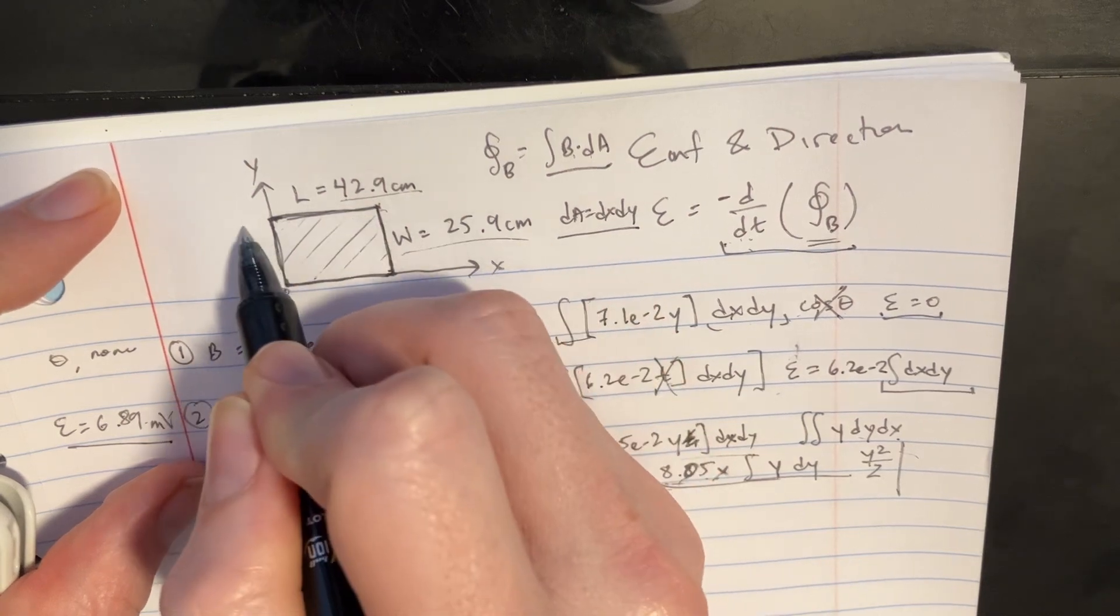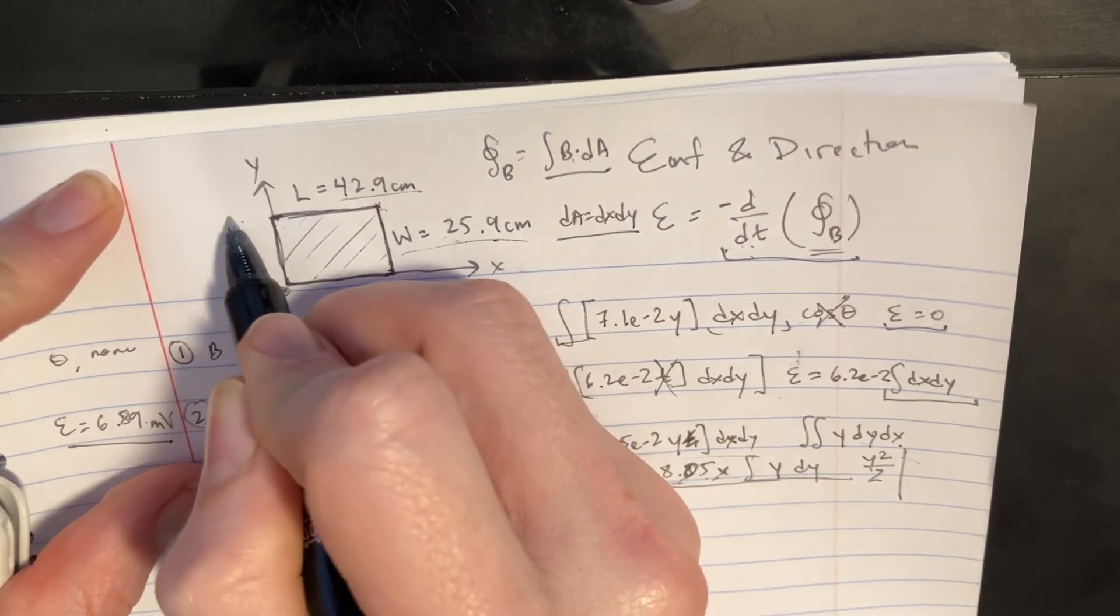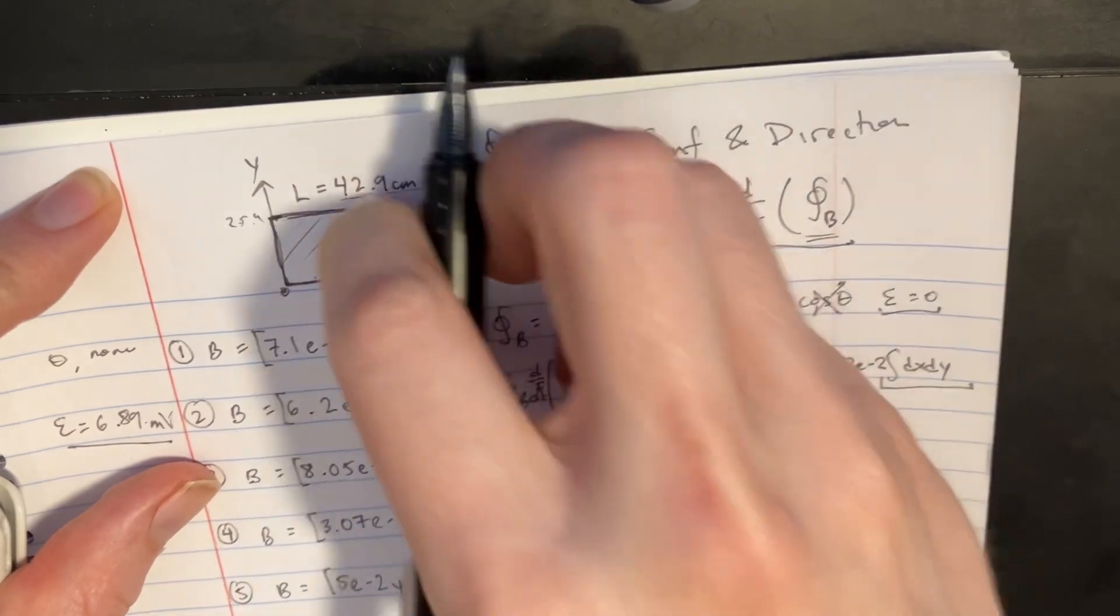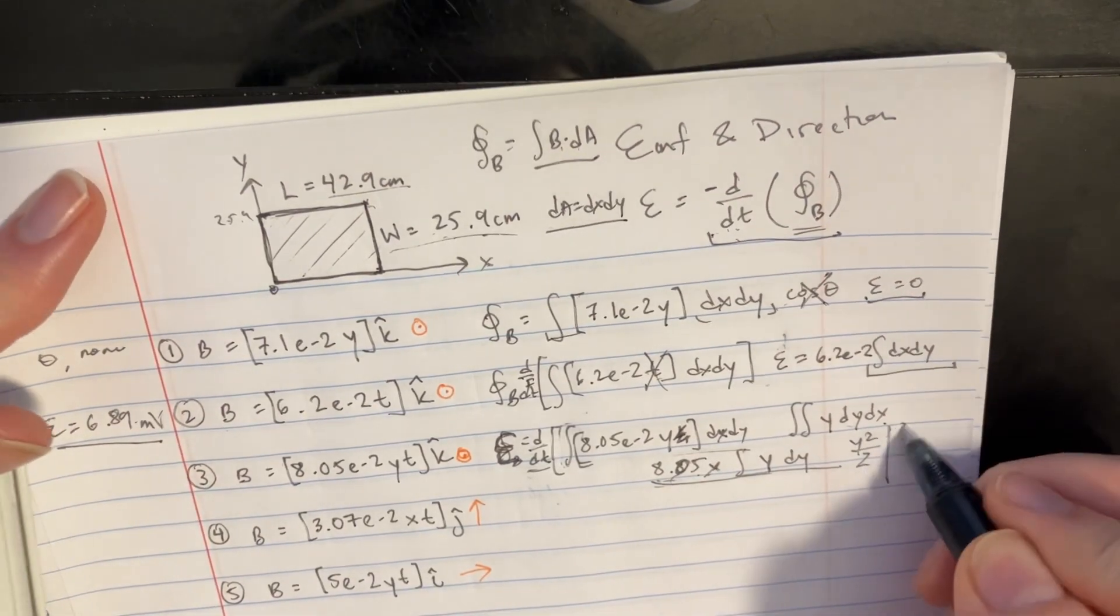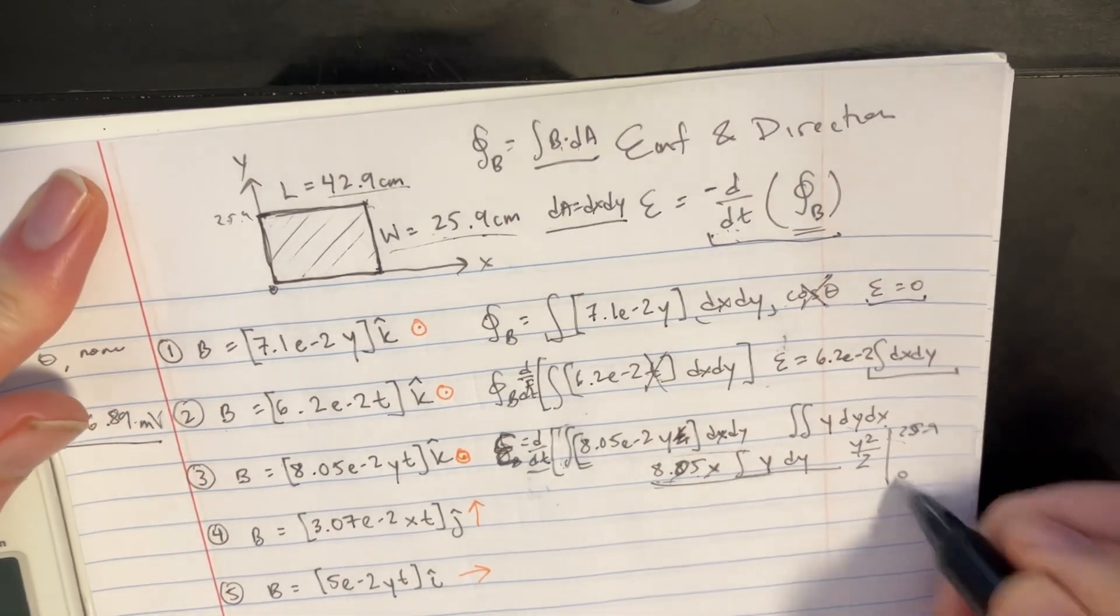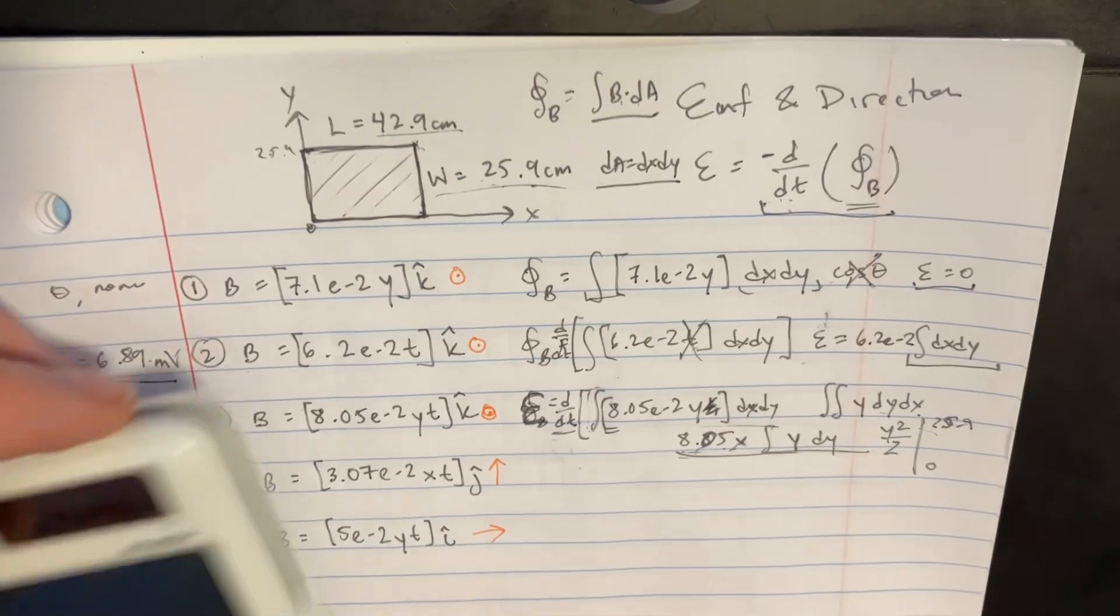Because we're going to be integrating over the distance from 0 to whatever the y was. It was 42.9. Or no, the y is supposed to be 25.9. So that's 25.9, that's the width. So 25.9 would essentially go here, and you get a 0 there, and try to integrate that.